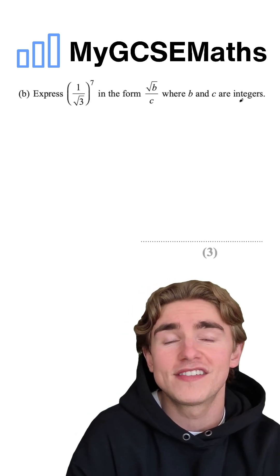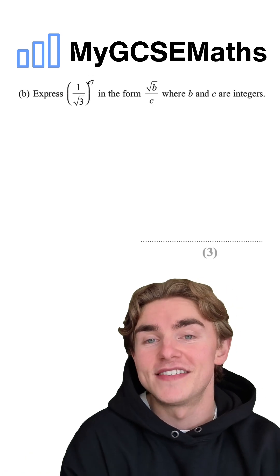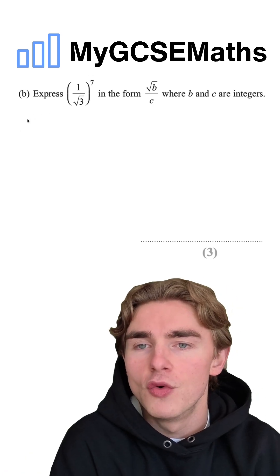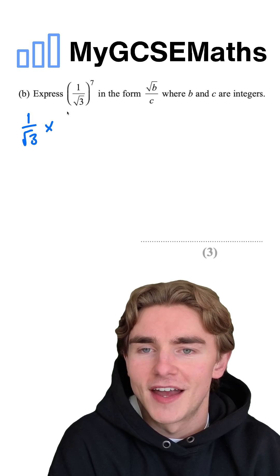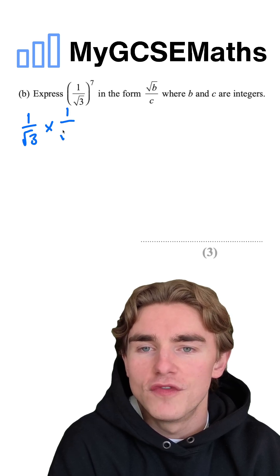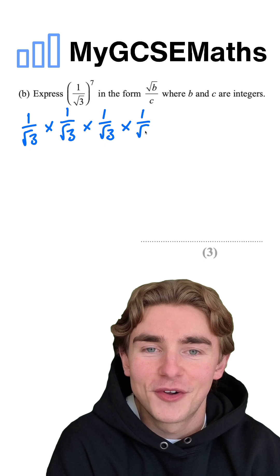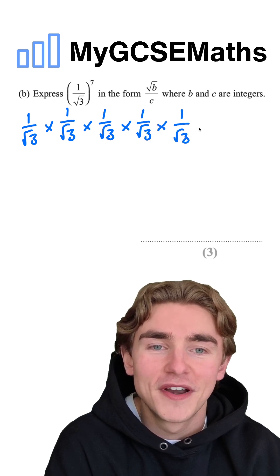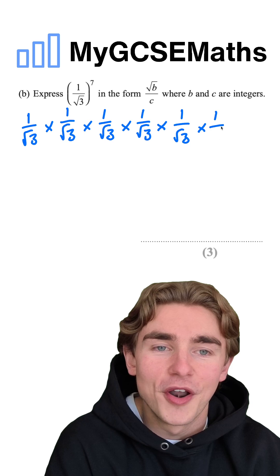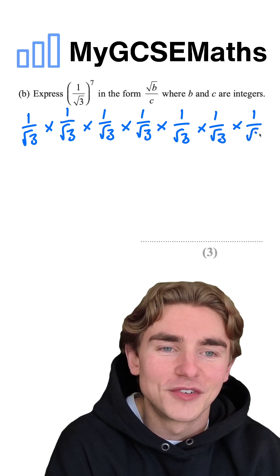There are a couple of different ways to do this. I personally would recommend writing this out 7 times. So we're going to have 1 over the square root of 3, times by 1 over the square root of 3, times by 1 over the square root of 3, times by 1 over the square root of 3, times by 1 over the square root of 3, times by 1 over the square root of 3, times by 1 over the square root of 3.